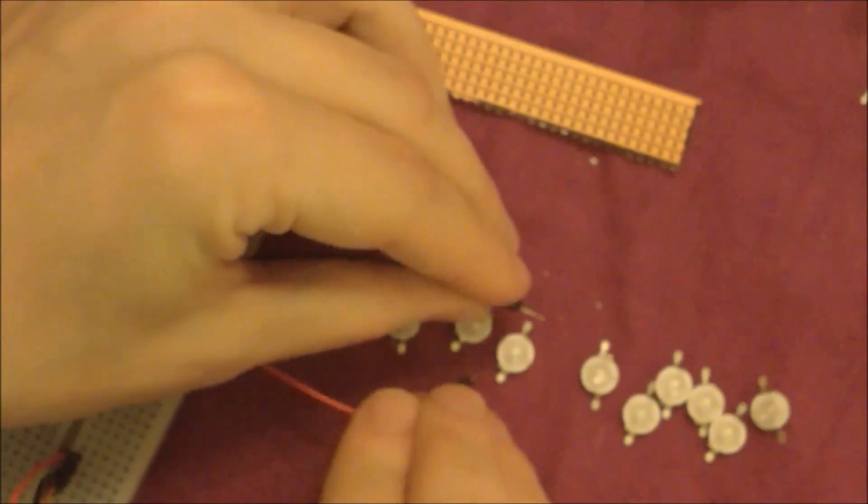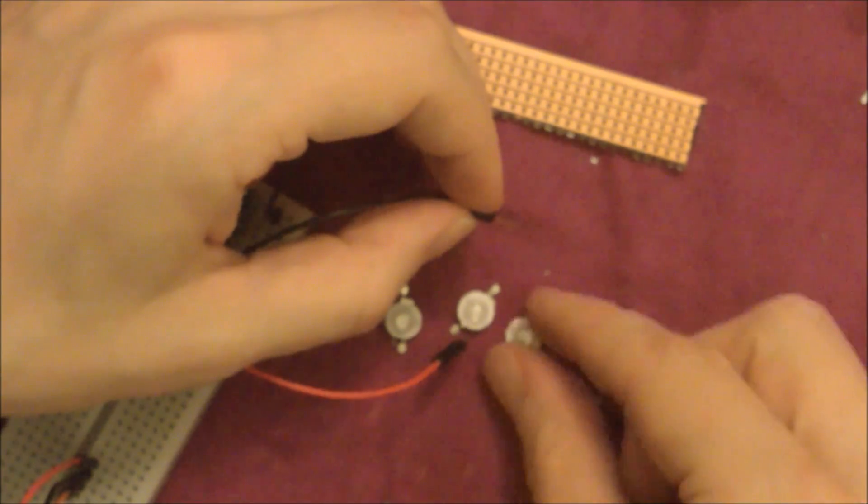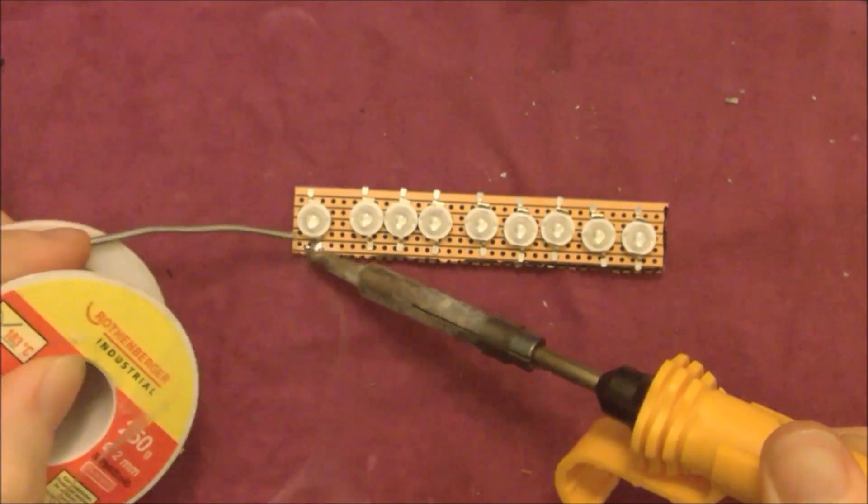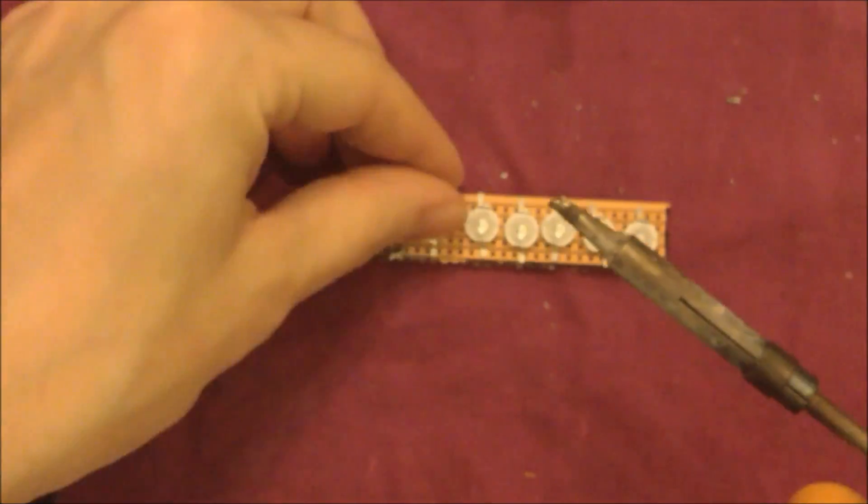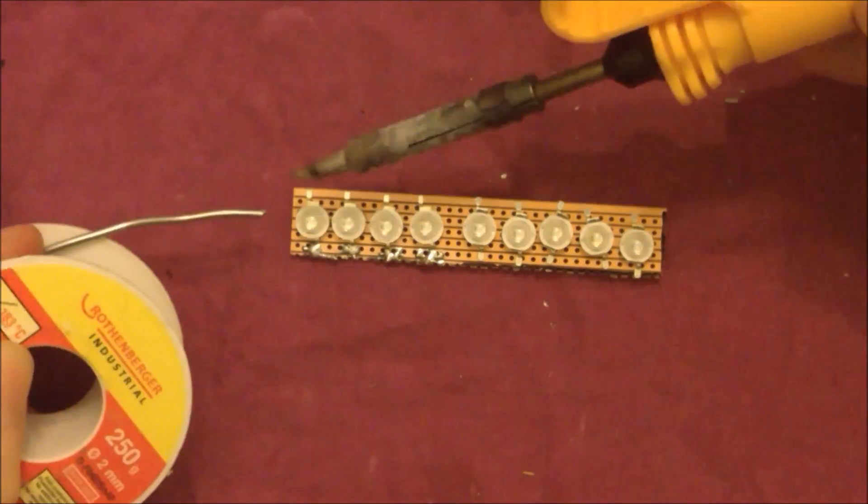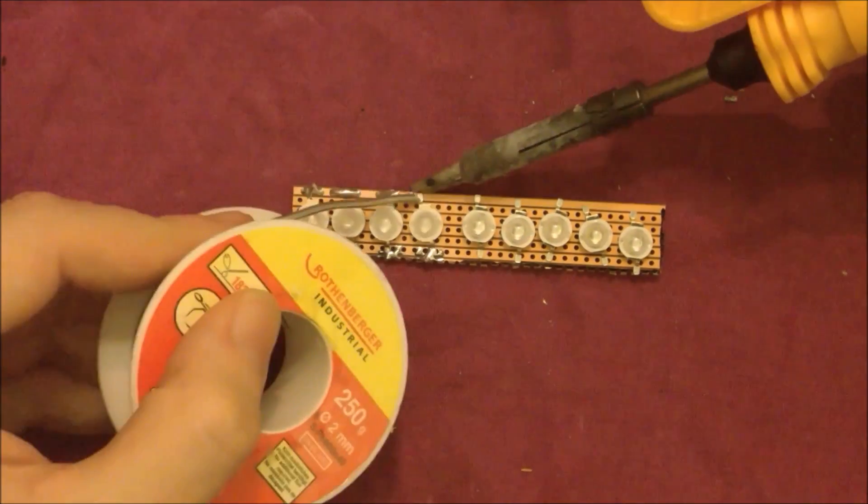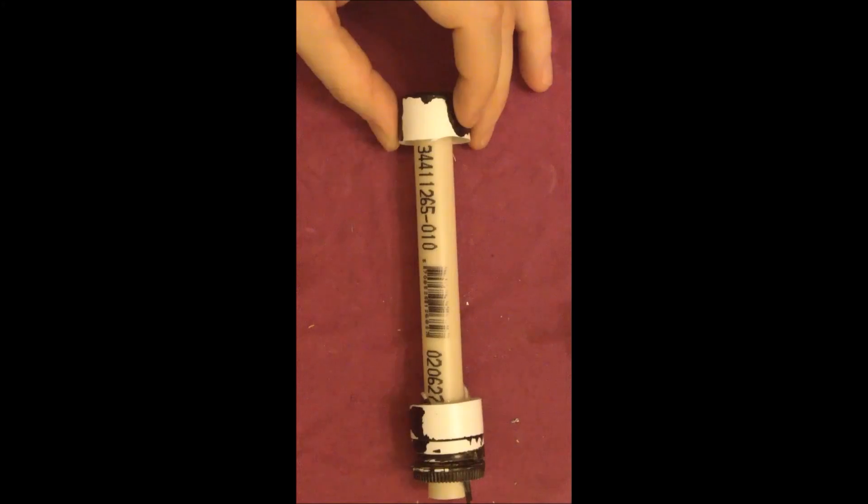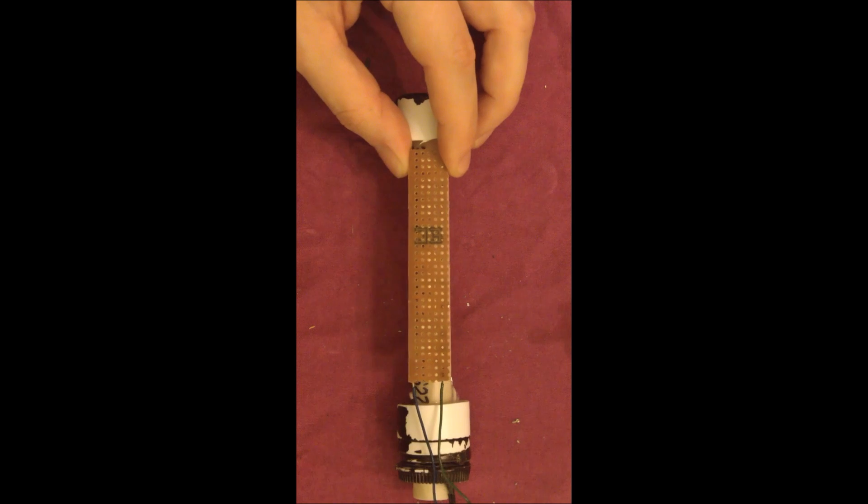First you align all the LEDs so that they have the positive on the same side and the negative on the same side. Then you just wire all the sides up so that all the negatives are wired together and all the positives are wired together.